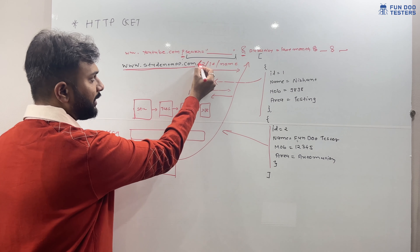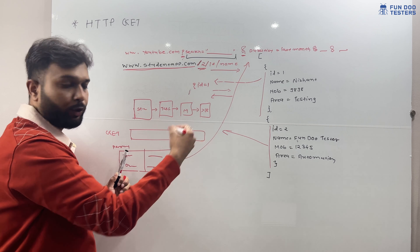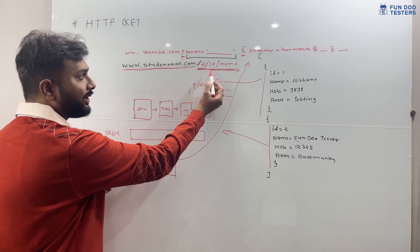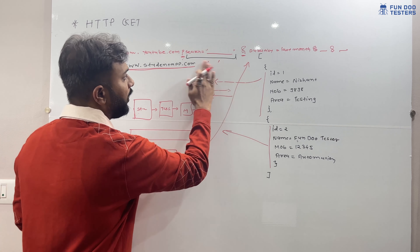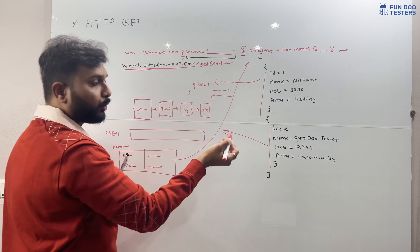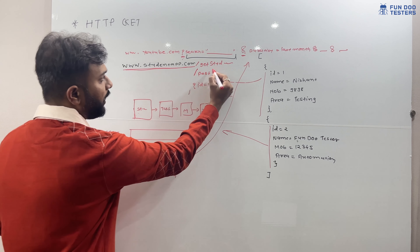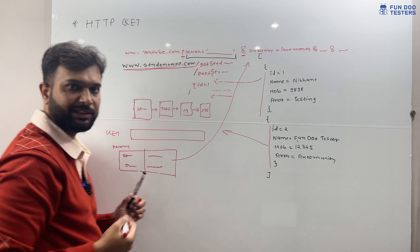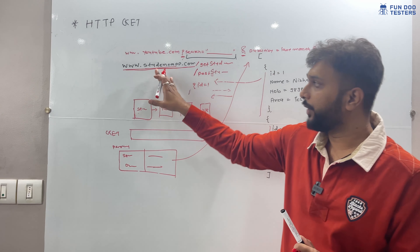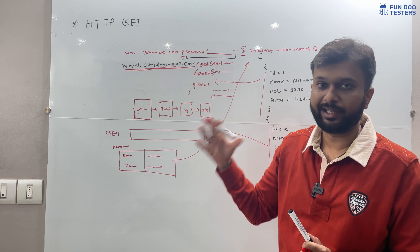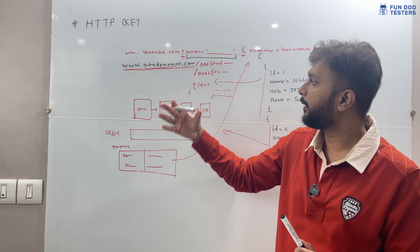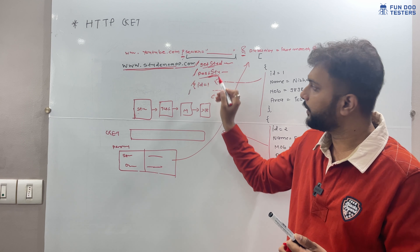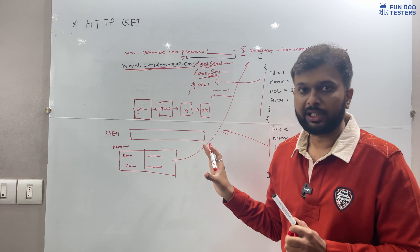After the base URI, whatever comes after the slash can be a particular page URL or product URL. The data can change according to the API call — for example, it can be 'get_student' or 'post_student'. The endpoint will change, but the base URI stays the same. In the real world, the base URI changes from environment to environment — for example, test.studentapp.com or dev.studentapp.com — while the endpoint remains the same.